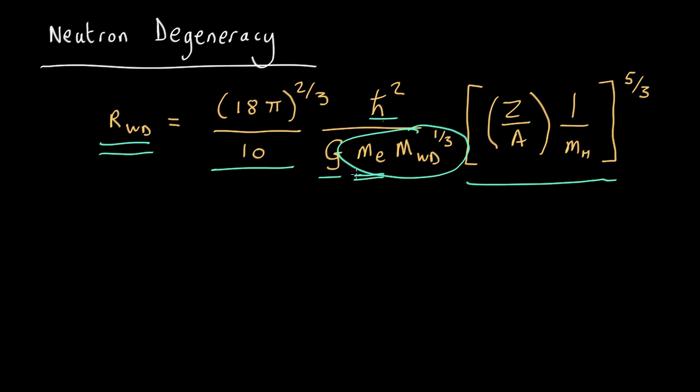Now, neutrons have a mass 1840 times that of an electron, so that's telling us the radius should be 1840 times less. So instead of a typical white dwarf radius, which is maybe 6000 kilometers, you divide that out by 1840 and end up with about 3 kilometers.